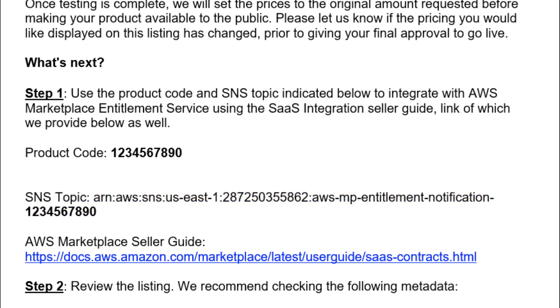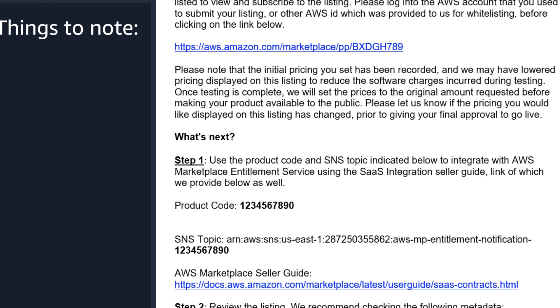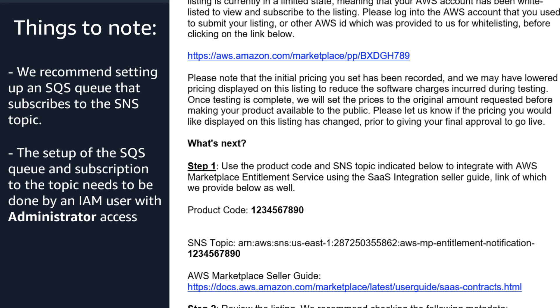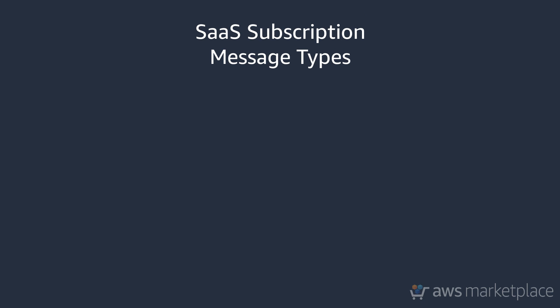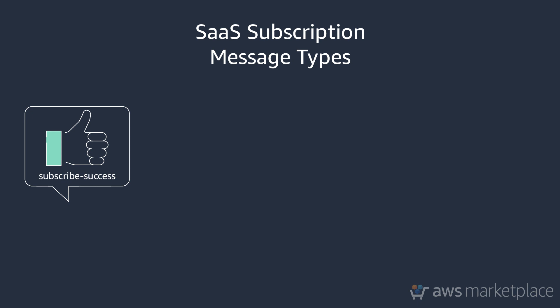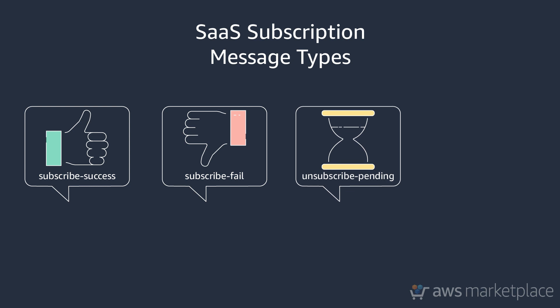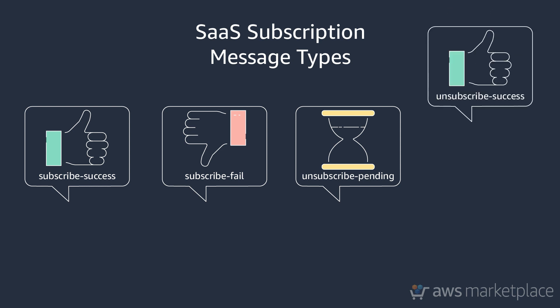Where 12345 represents the product code. We recommend setting up an AWS SQS queue that subscribes to the SNS topic. Note, the initial setup of this queue and subscription to the topic needs to be by an IAM user with administrator access. As a SaaS subscription provider, you must handle four different messages. One, subscribe success, which is sent when a subscription is valid. Two, subscribe fail, which is sent when a subscription is not valid. Three, unsubscribe pending, which indicates that you have one hour to send final metering records. And four, unsubscribe success.